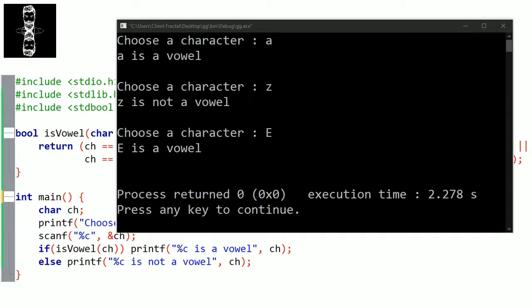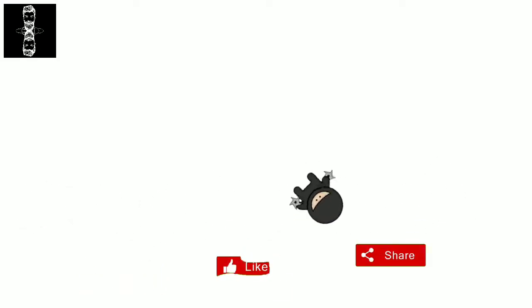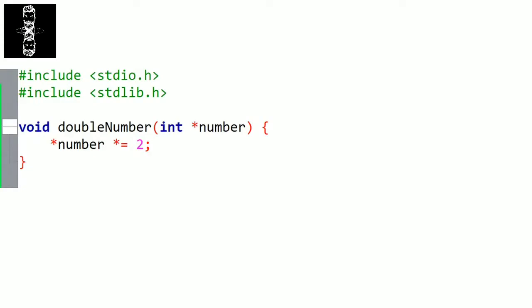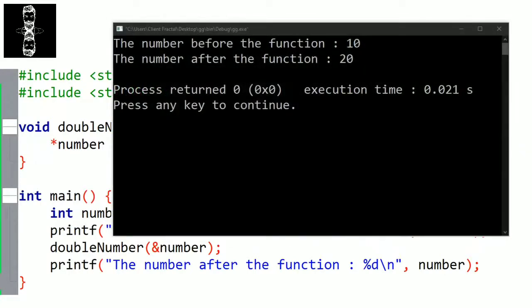Now let's create a function that doubles a number. We will modify the original value, so we need pass by reference — we must give the address. The function returns nothing, so it's void. Let's name the function doubleNumber. In the parameters we need a pointer, since we're passing the address. Inside we multiply the parameter by two. If we call this function from the main, you can see that the variable's value got modified.